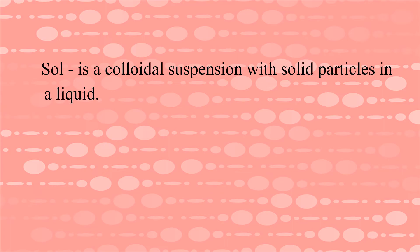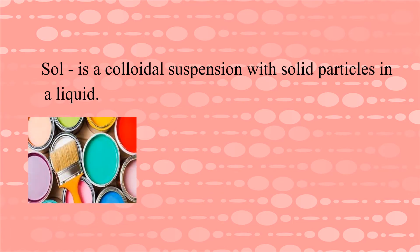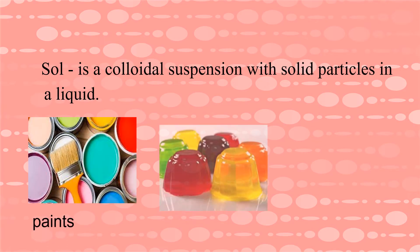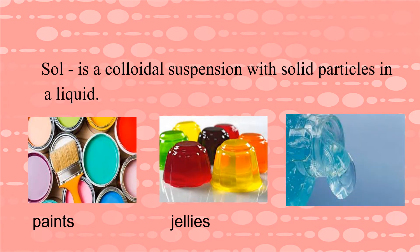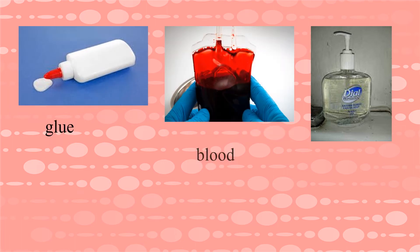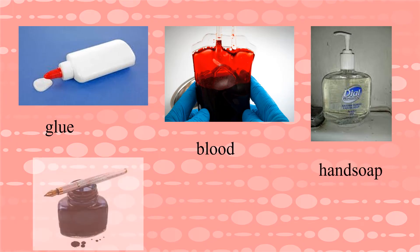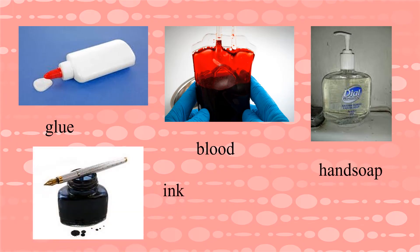The next one is sol — it is a colloidal suspension with solid particles in a liquid. The examples are paints, jellies, gel, glue, blood, hand soap, and ink.